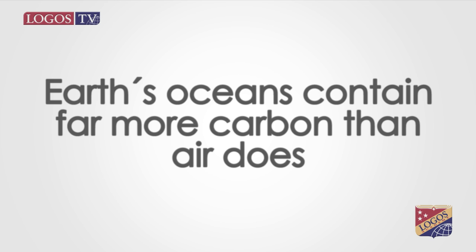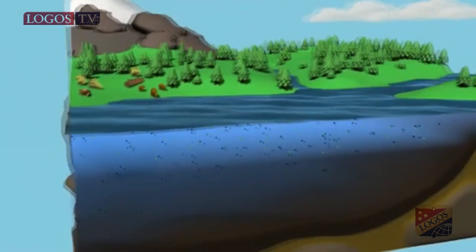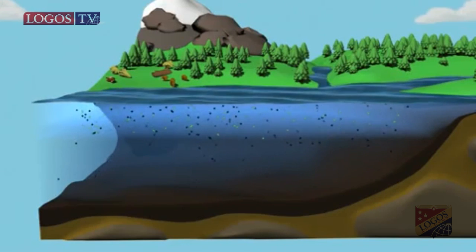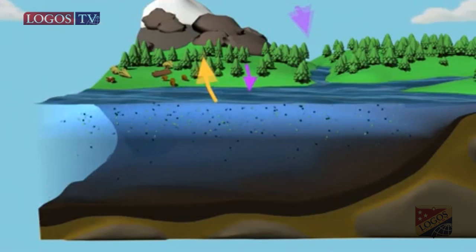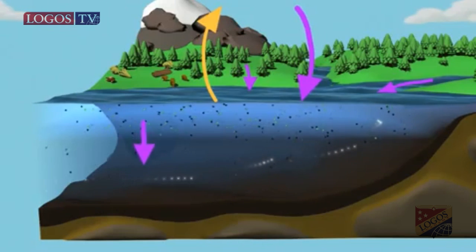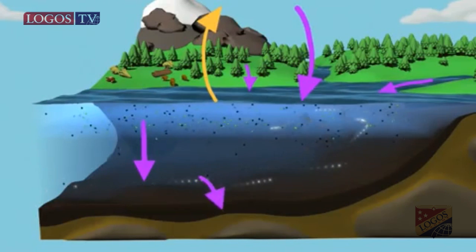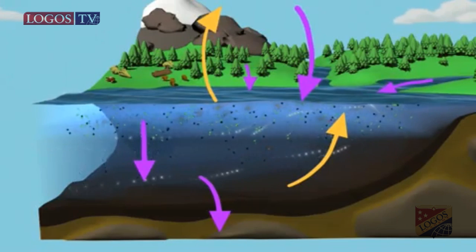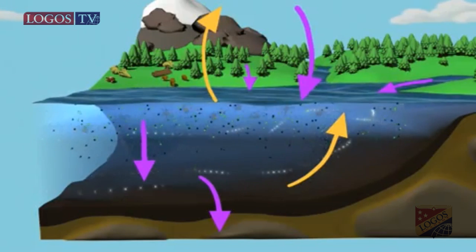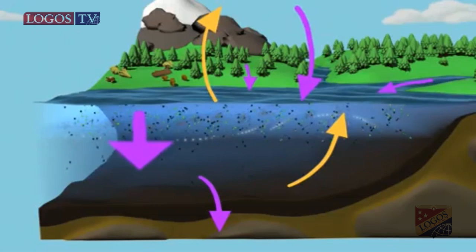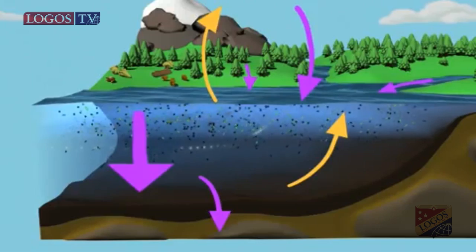Oceans contain far more carbon than the air does. In water ecosystems — lakes, rivers, and oceans — the carbon dioxide is dissolved in water. Here, algae and certain types of bacteria are photosynthetic organisms that produce food in these ecosystems. Marine organisms, too, release carbon dioxide during respiration.